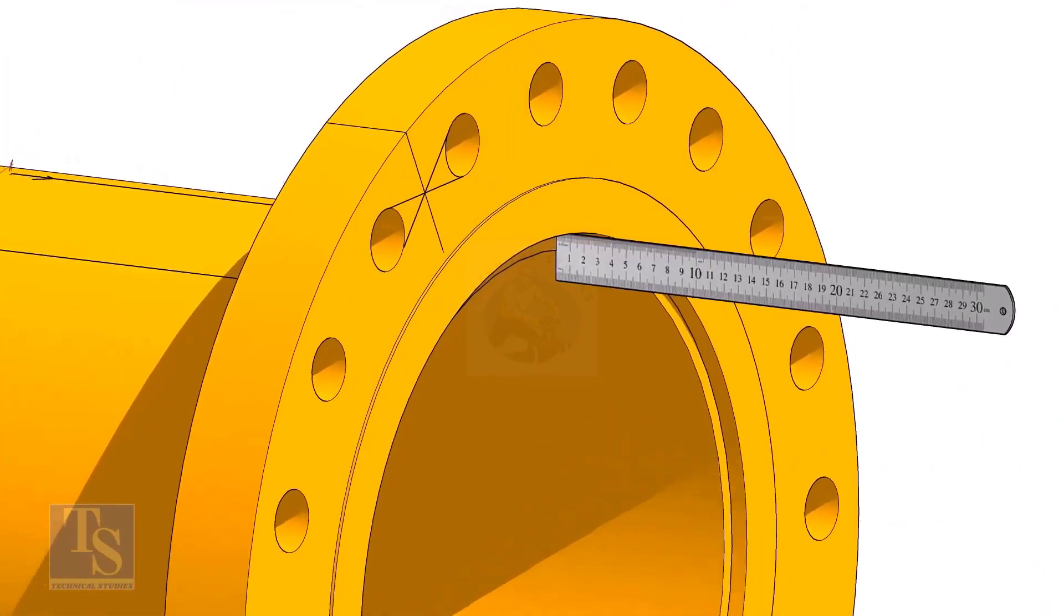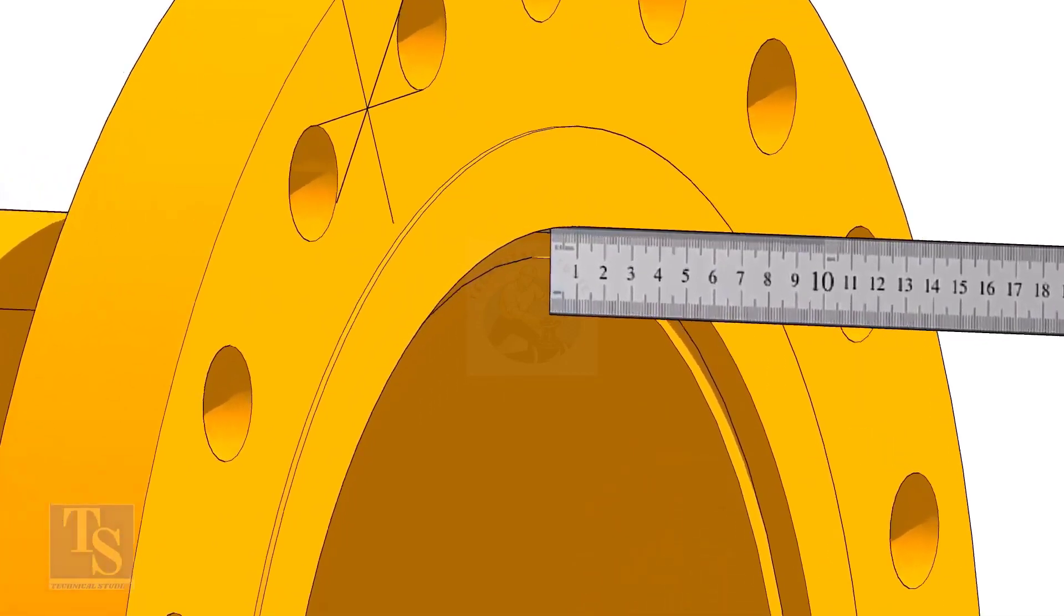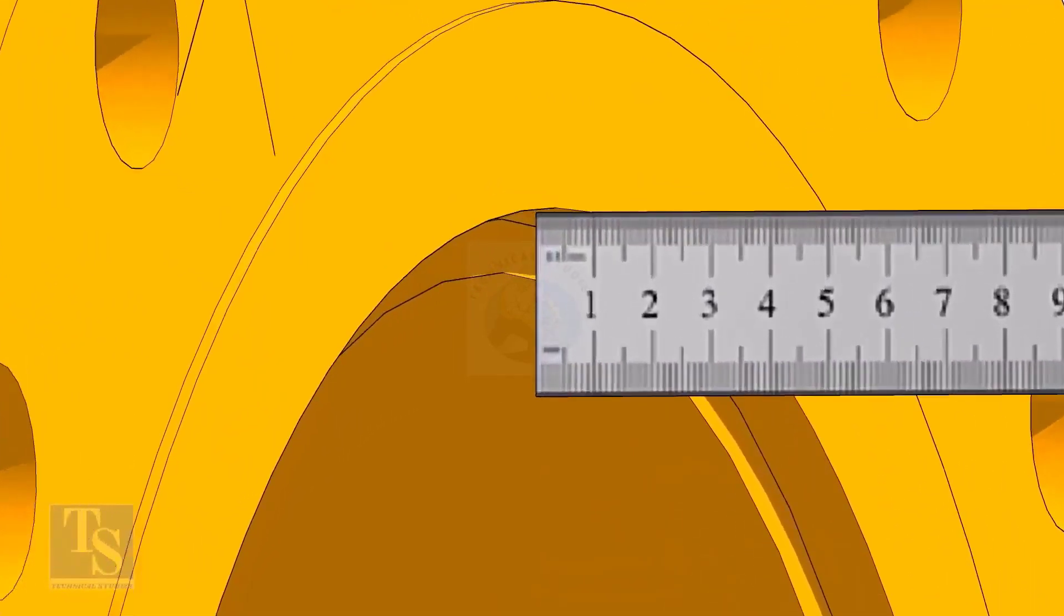Fix the distance between the flange face and the pipe face. Usually, this measurement is equal to the thickness of the pipe.